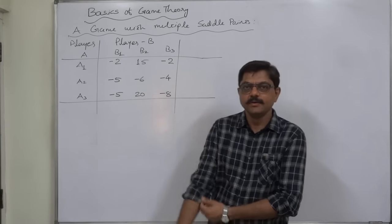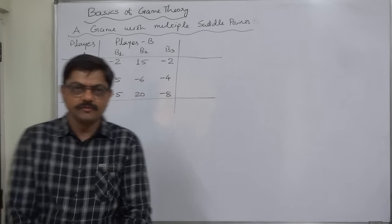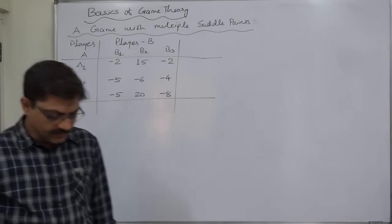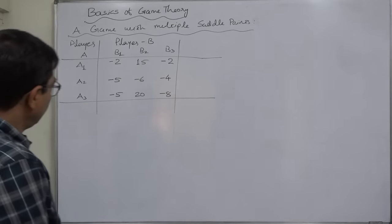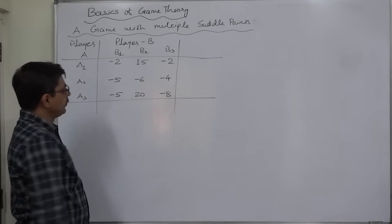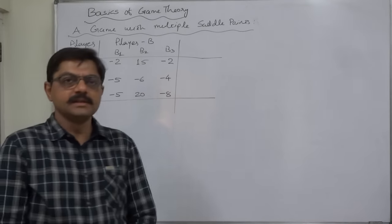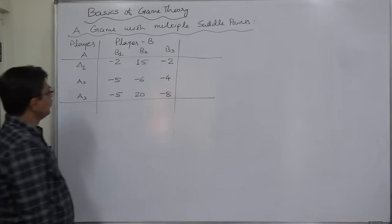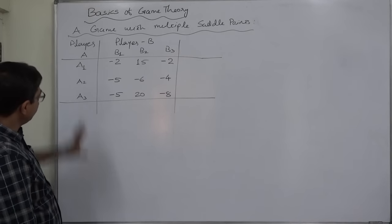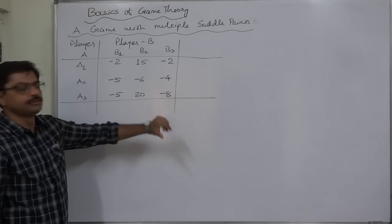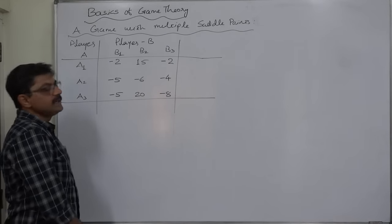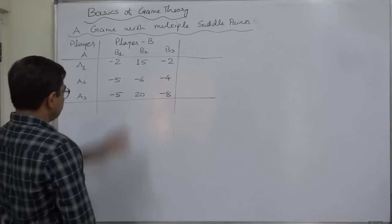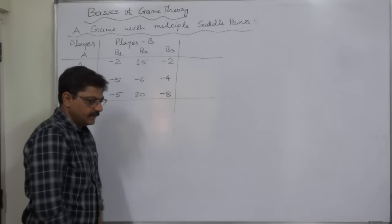Let us take a new case in which we are going to cover a game with multiple saddle points — that means at more than one location we can find the saddle point of the game. There are two players as usual, A and B. A has three alternative strategies: A1, A2, A3, and similarly B has three alternative strategies: B1, B2, B3.